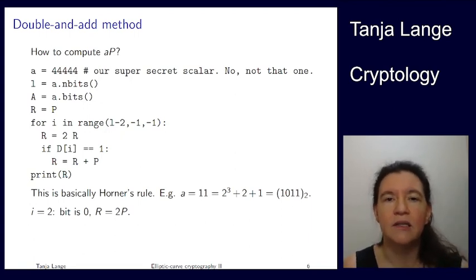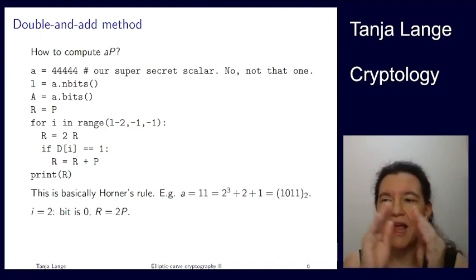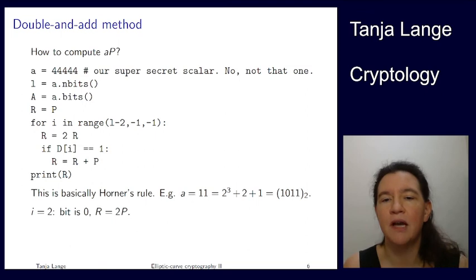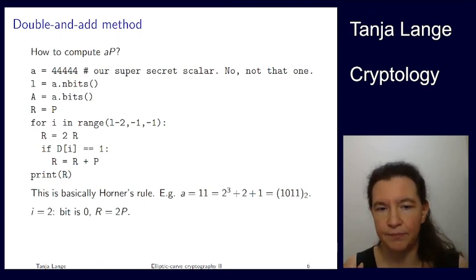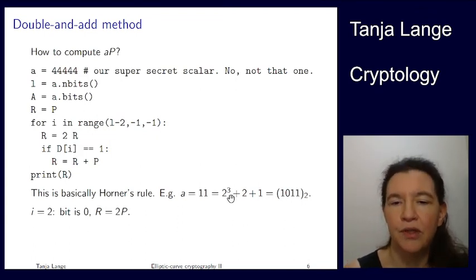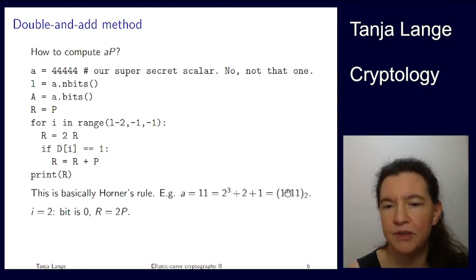So if you understand Horner's rule—that is, taking a polynomial evaluation and just putting the x on the outside, similarly here, putting the times 2 on the outside—here is a numerical example. If I look at the integer 11, then that is 8 + 2 + 1. So if I write this in binary, then I look at the 2³, so that's the fourth bit here; that's 1. And there's no 2², so that bit is 0. There's 2¹, that bit is 1, and that's a 1, so that bit is 1.